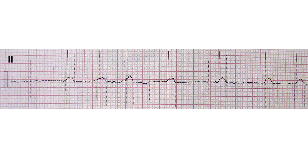Single-channel ECG machines, also called one-channel machines, are used rarely. They print only one lead, usually in the following order: 1, 2, 3, AVR, AVL, AVF, and from V1 to V6. A rhythmogram is not recorded.